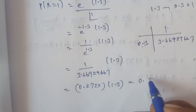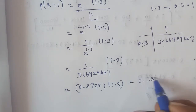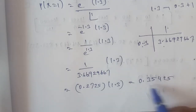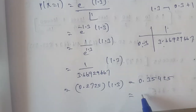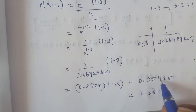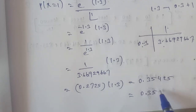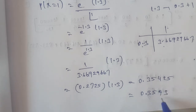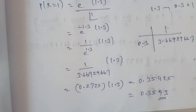Therefore, P of X equal to 1 is equal to 0.35425. Thank you.